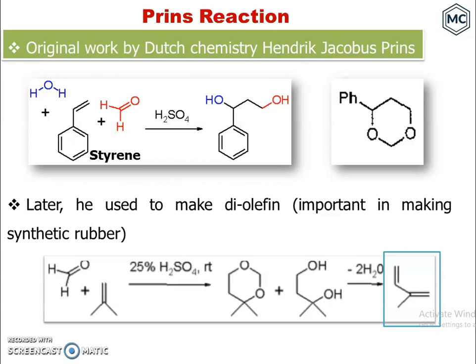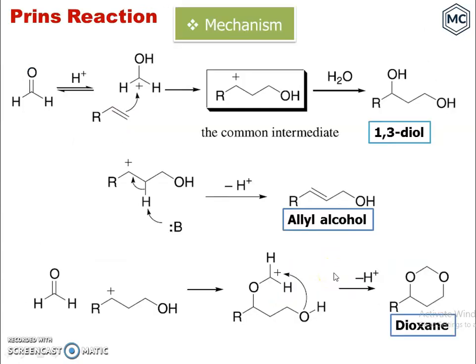Isoprene is used for making synthetic rubber. Now for the mechanism of this reaction: the proposed mechanism begins with formaldehyde undergoing protonation.